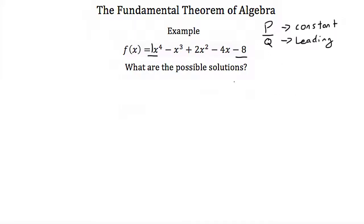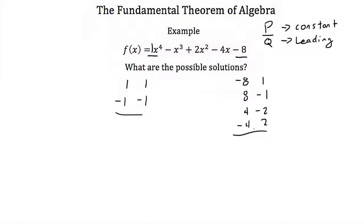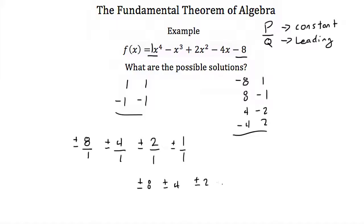The factors of negative 8 come from: negative 8 and positive 1, positive 8 and negative 1, 4 and negative 2, and negative 4 and positive 2. The leading coefficient is 1, so q is just plus or minus 1. Plugging all combinations of p over q, our possible rational solutions are plus or minus 8, plus or minus 4, plus or minus 2, and plus or minus 1 — since dividing by 1 doesn't change the value.